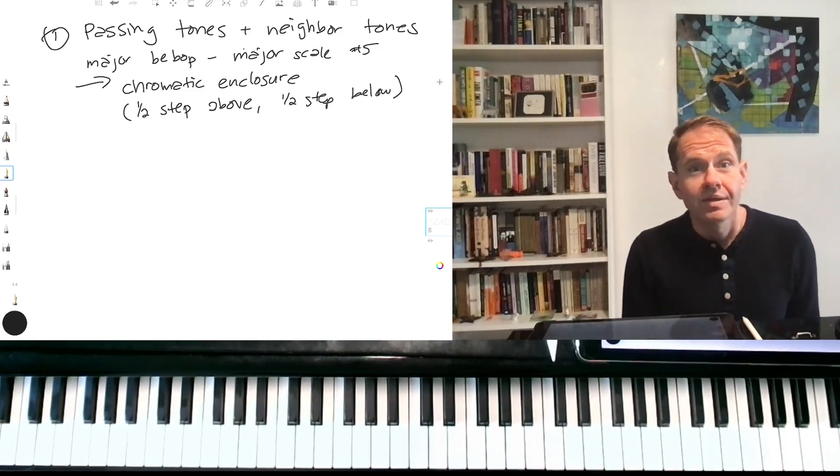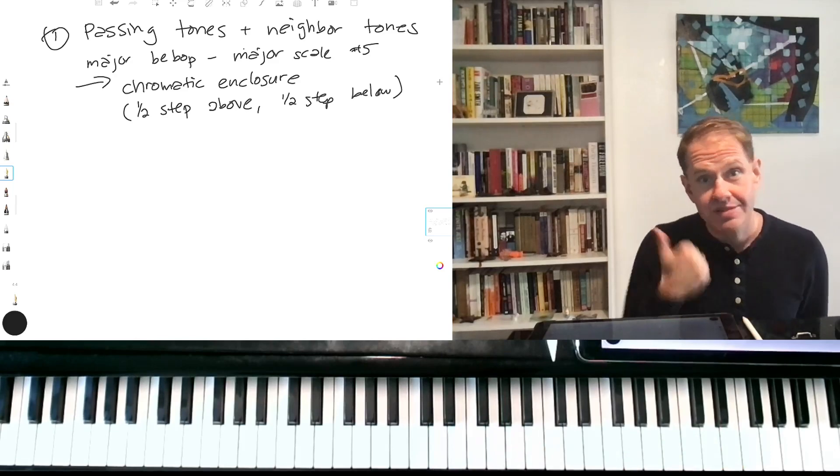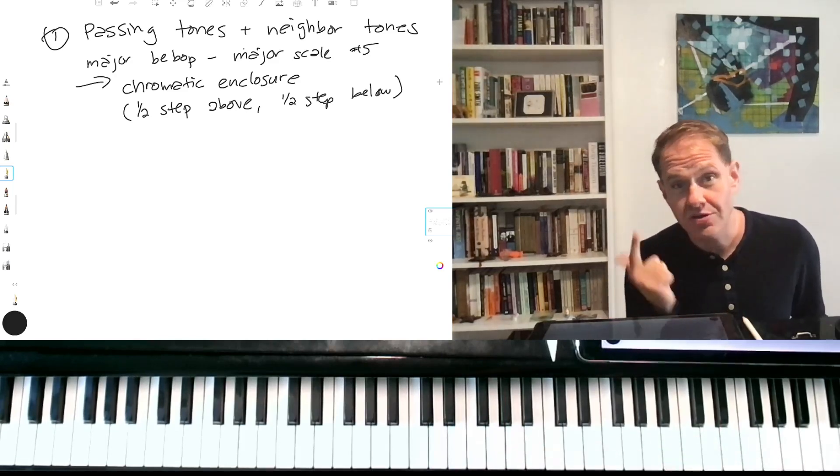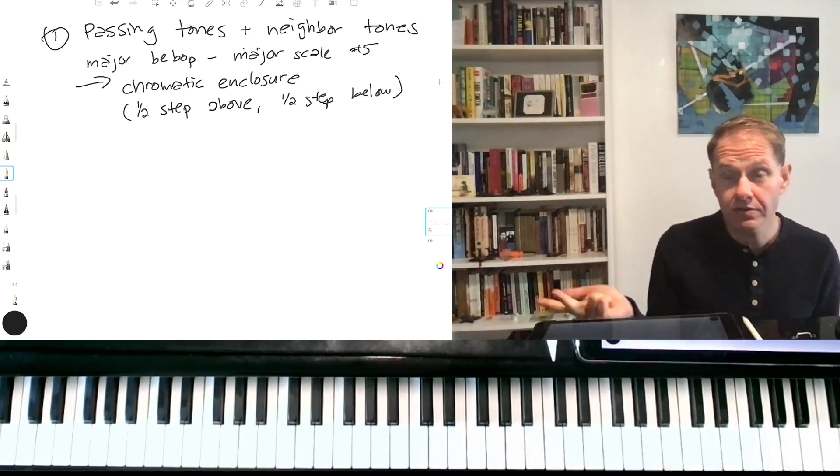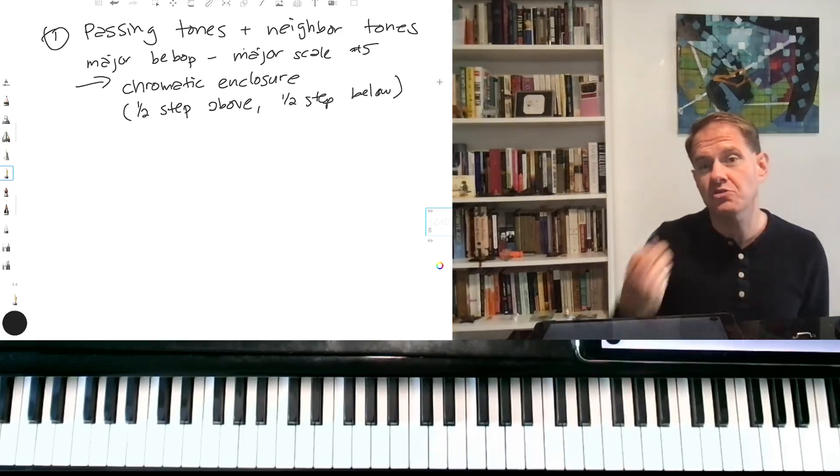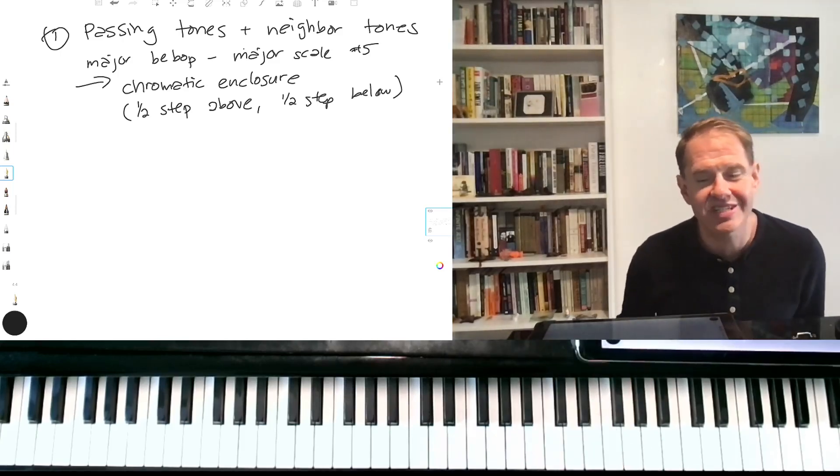So these are all melodic devices that you can use to add chromatic passing tones, neighbor tones. You can think about it as your bebop scale, your chromatic enclosure is a special kind of neighbor tone. It's a double neighbor, essentially.